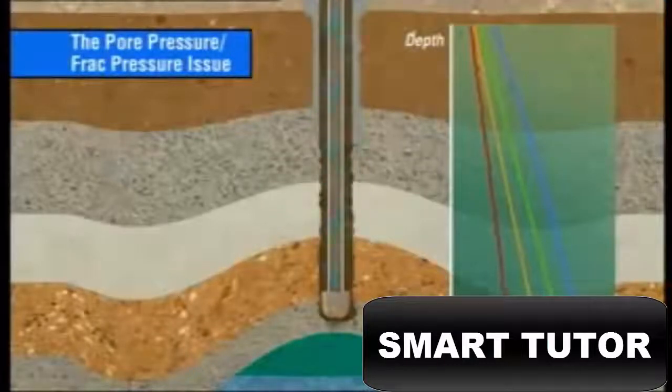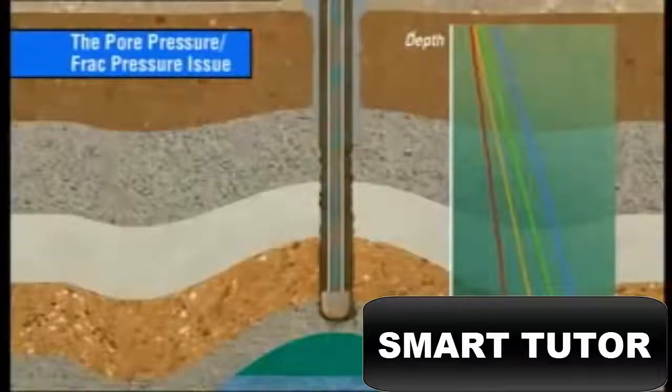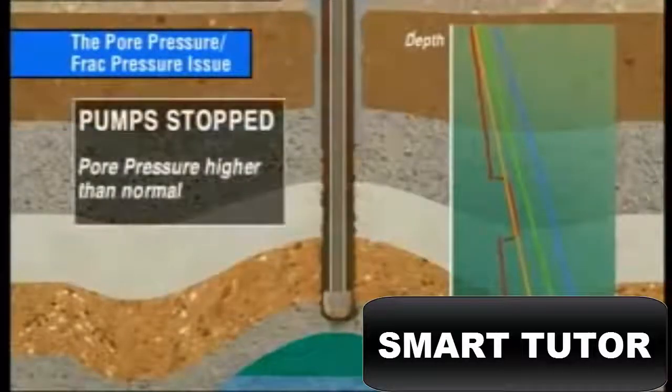In many drilling environments, there's sufficient difference between the pore pressure and the fracture pressure to permit drilling without significant problems. However, when the pore pressure is higher than normal and the pumps are stopped, the lower bottom hole pressure may allow hydrocarbons to flow into the well bore, thus creating the conditions for a kick and a potential blowout.